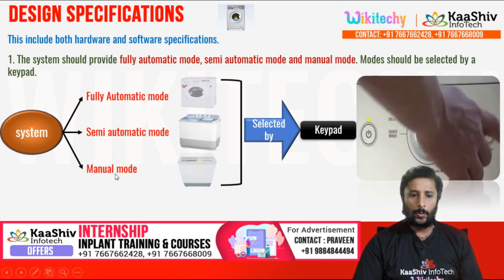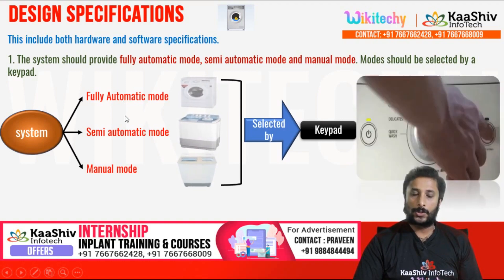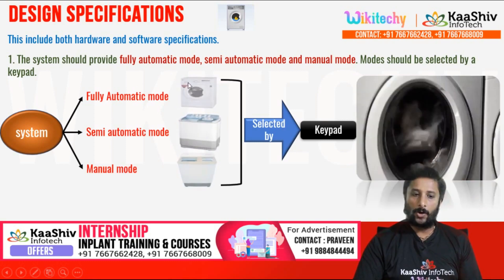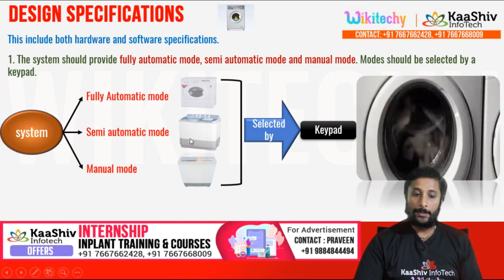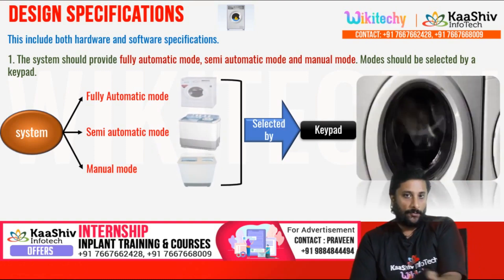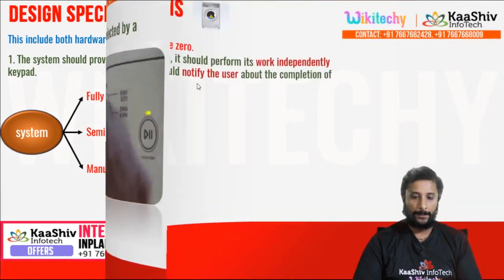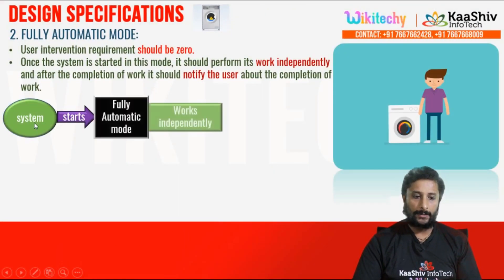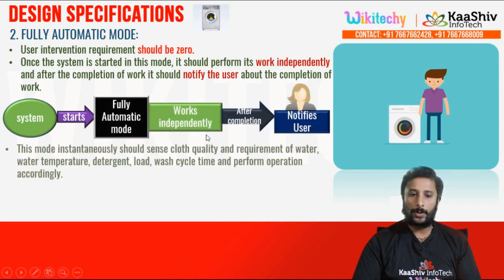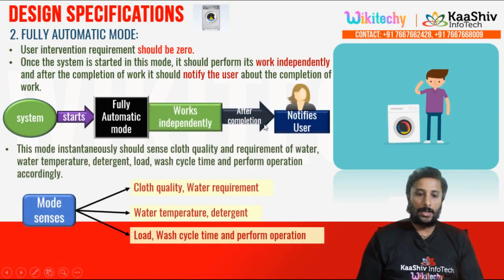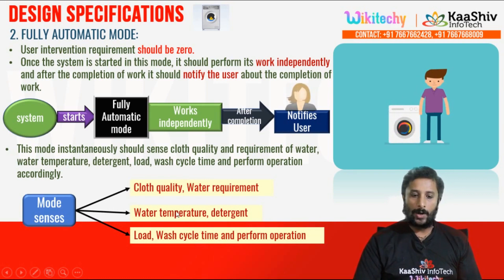The general code is called the fully automatic mode. What is the fully automatic mode? The semi-automatic mode is called manual mode. The fully automatic mode — the system starts fully automatic mode. That is independent of work and we will do the clothes quality, water requirements, temperature, detergent — all of them automatically.